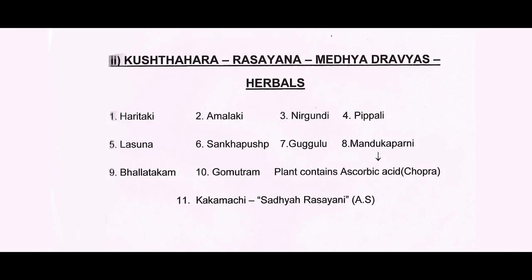Kostahara, Rasayana, Mechadaravyas — from herbals: Haritaki, Amalaki, Nirgundi, Tippali, Lashuna, Sankhapushpi, Guggulu, Bandukaparani. Bandukaparani Svarsam is more important. Gomutram — there is an observation by Chopra in his textbook of medicinal plants saying that it contains ascorbic acid, which is a very good skin protector. Bandukaparani, as a Mechadaravya Rasayana and Kostagana, has a wonderful role in maintaining most skin diseases. Kakamachi is a drug of choice as Sajaravya Rasayana — it is Medyam, Asayanam, Kostaganam — a very good drug from Ashtanga Sangraha.